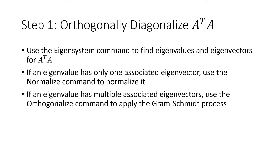The way we're going to do that is by using the eigensystem command, which gives us a list of eigenvalues and their associated eigenvectors. Those eigenvectors won't necessarily be unit vectors or orthogonal to each other. We fix them by normalizing — which shrinks or expands a vector to be a unit vector — when there's only one eigenvector per eigenvalue. If multiple eigenvectors share an eigenvalue, we use the orthogonalize command, which applies the Gram-Schmidt process to make them orthogonal.